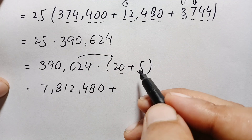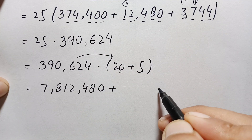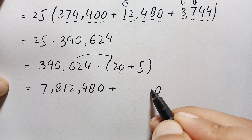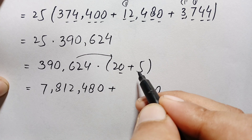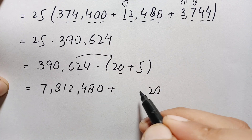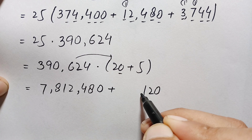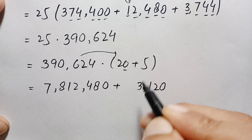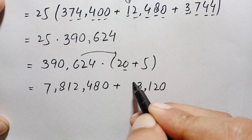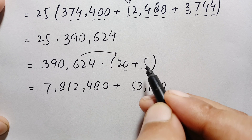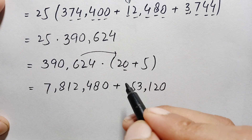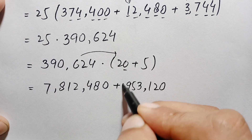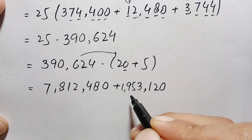Now multiply 390,624 by 5: 5 times 4 is 20 — write 0, carry 2; 5 times 2 is 10, plus 2 is 12 — carry 1; 5 times 6 is 30, plus 1 is 31 — write 1, carry 3; 5 times 0 is 0, plus 3 is 3; 5 times 9 is 45 — write 5, carry 4; 5 times 3 is 15, plus 4 is 19. So 390,624 times 5 gives 1,953,120.